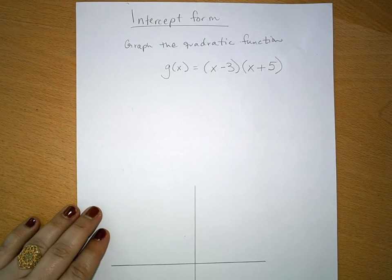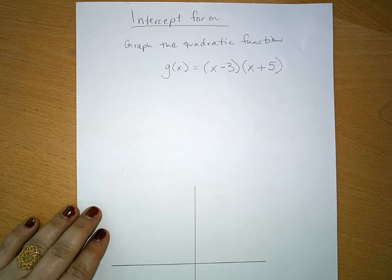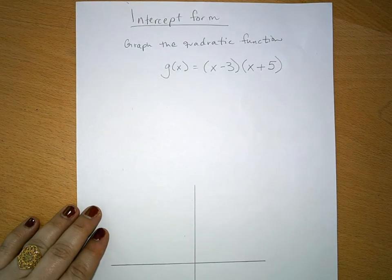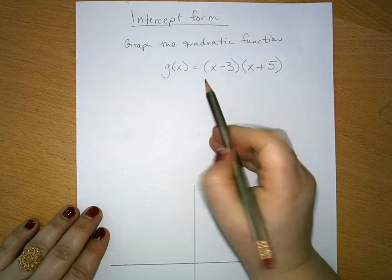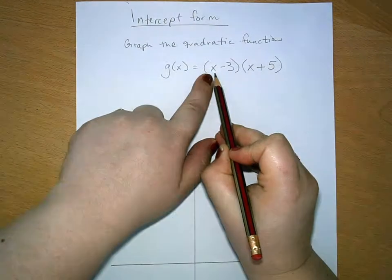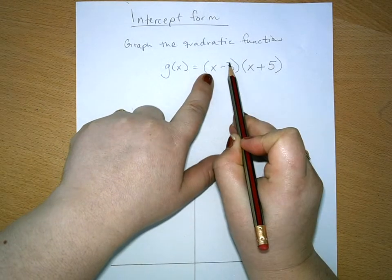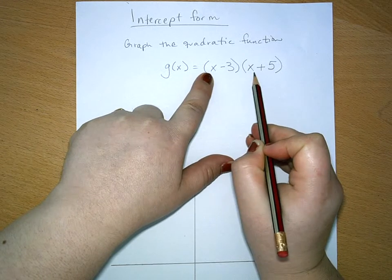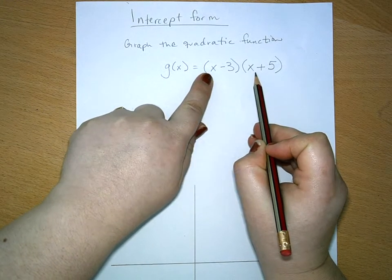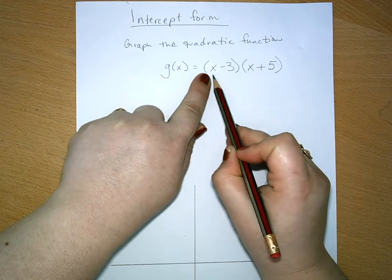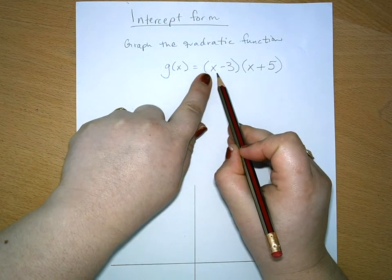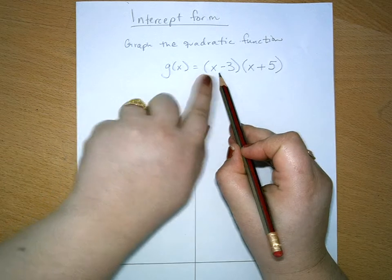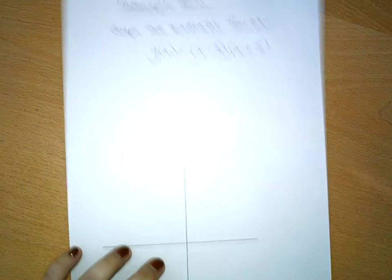In the intercept form of quadratics, you can automatically know what the intercepts are - the x-intercepts. You can see that if you substitute in a 3 here, you'd get 0. And then 0 times whatever this value is, let's say 0 times 8, is going to be 0. And so an input of 3 gives an output of 0. That's an x-intercept.